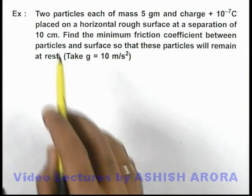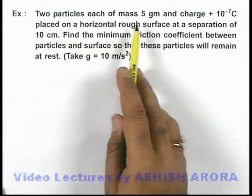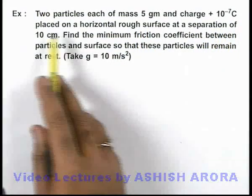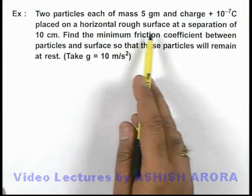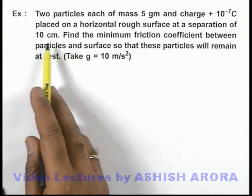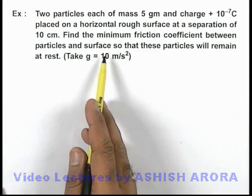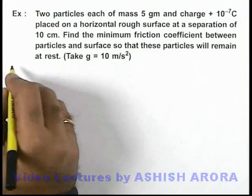In this example we are given that there are two particles, each of mass 5 grams and charge 10 to power minus 7 coulombs, placed on a horizontal rough surface at a separation of 10 centimeters. We are required to find the minimum friction coefficient between the particles and the surface so that these particles will remain at rest.